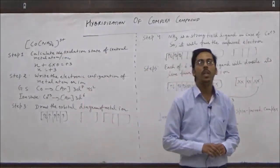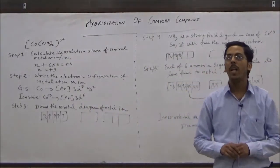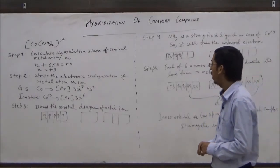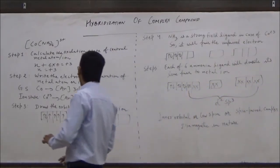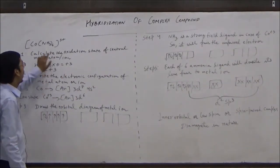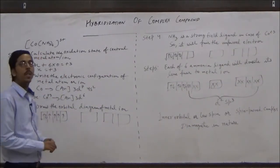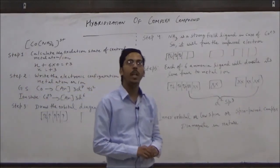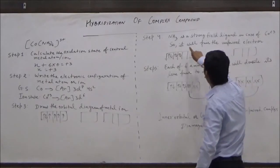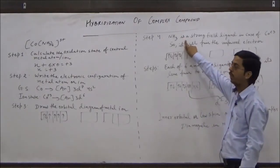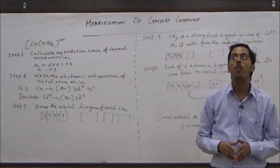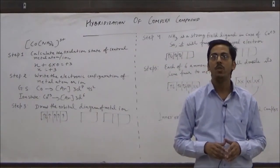In step 3, we will draw the orbital diagram of the metal ion in the absence of any ligand. In the absence of any ligand, the orbital diagram would show 6 electrons in 3d. Now, generally ammonia is considered a weak ligand, but in the case of cobalt +3, ammonia acts as a strong field ligand. You must remember this — ammonia is generally a weak ligand, but in the case of cobalt +3, it acts as a strong field ligand.